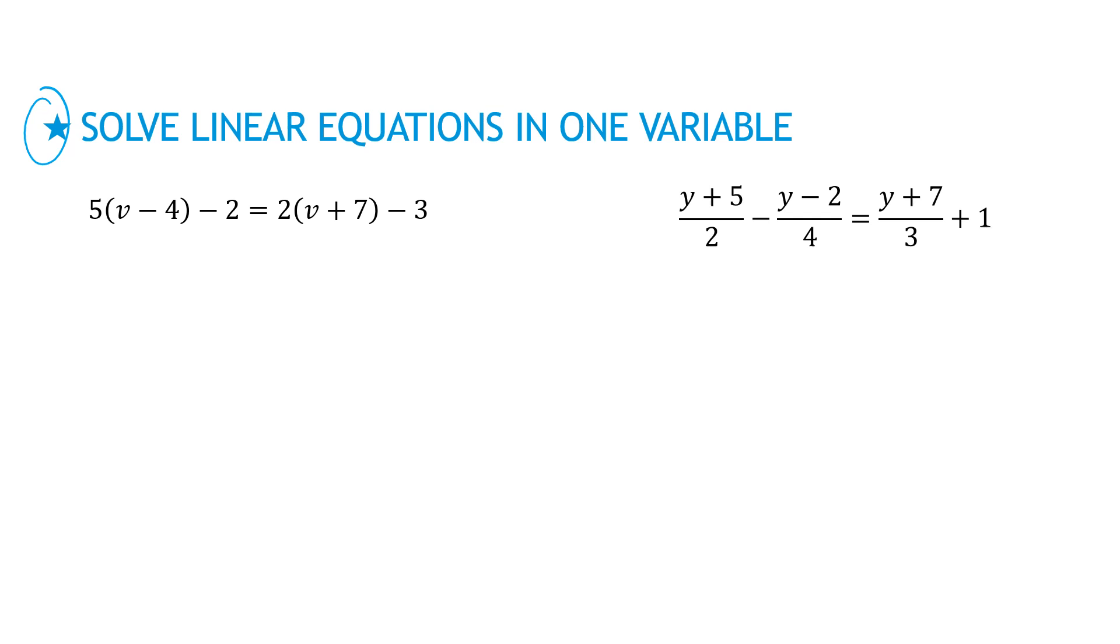The first one's pretty straightforward because we don't have any fractions. I'm just going to use my distributive property. I get 5v minus 20, and then keep the minus 2. Distribute my 2 to 2v plus 14. Notice the 2 does not distribute to the 3 because the 3 was not in parentheses, so I just rewrite it. Now I'm going to combine like terms on each side. On the left side, I have 5v minus 22, and on the right side, I have 2v, and I'm combining 14 and minus 3 to get 11.